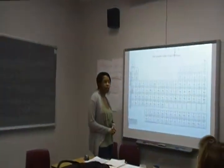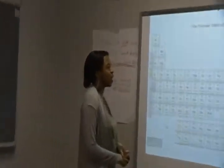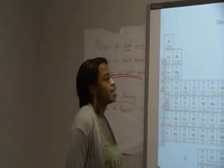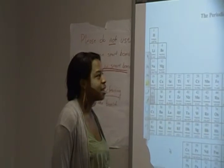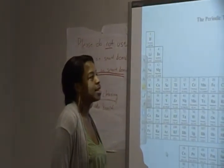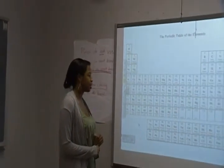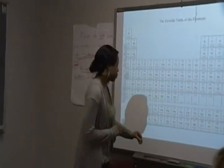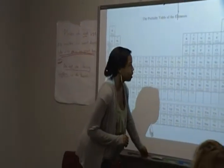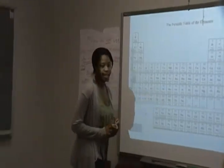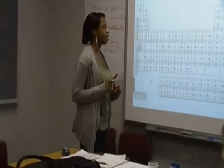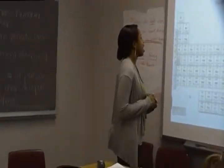From a previous class, we already talked about the periodic table: what the atomic number was, what the atomic symbol was, and what the atomic mass is. So let's quickly review what the atomic mass number is by looking at your periodic table.